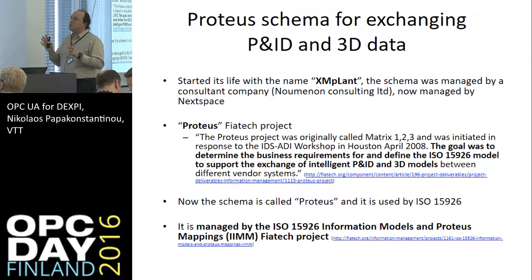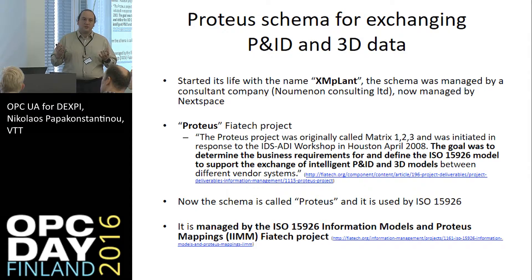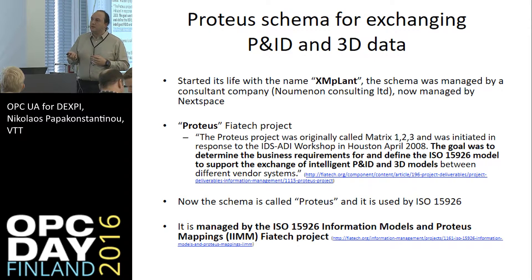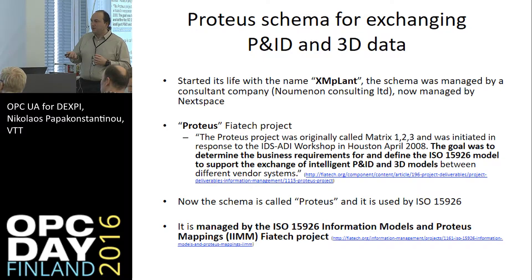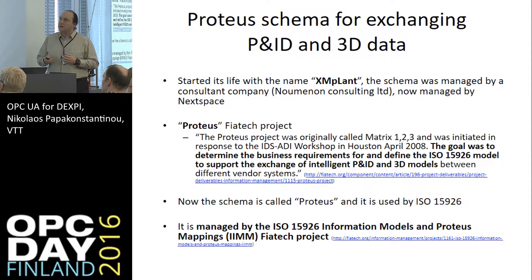A few words about the Proteus schema. This specification specializes the ISO 15926-6 standard in a way that is practically useful for companies. The way to store this information is in Proteus XML — that's how the Proteus schema comes into the picture. It used to be called XMplant, and many companies know it by that name, but that was a protected name, so the open name is now Proteus. It used to be a FIATECH project, and now the schema is maintained by a FIATECH project called Information Models and Proteus Mappings. The XMplant used to be managed by the Numenon consultant company, but now the rights have been transferred.